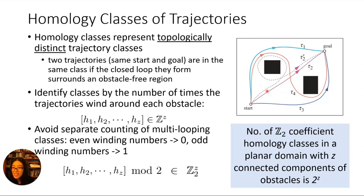For example, tau2-prime has an unnecessary loop, but we want to treat it the same as tau2. To avoid counting those as separate classes, we instead look at Z2 coefficient homology classes, where even numbers are mapped to zero and odd numbers are mapped to one. Since each number in this vector can now only be zero or one, and the length of the vector is the number of obstacles z, the number of classes equals 2 to the z.